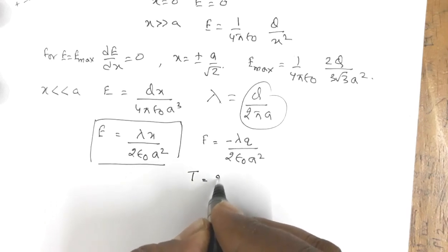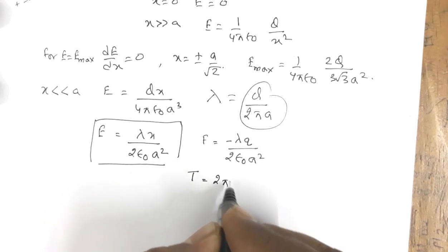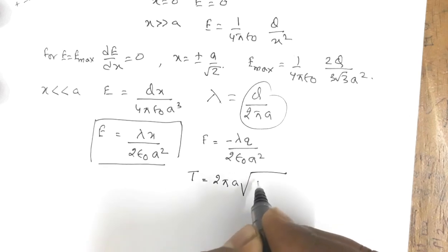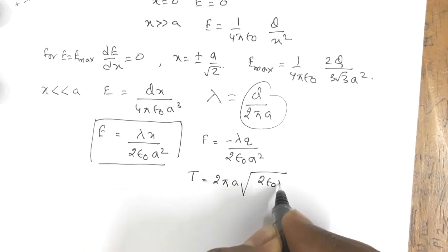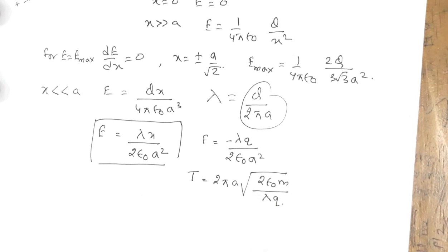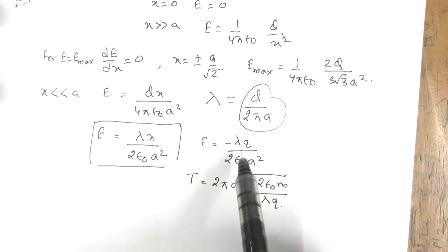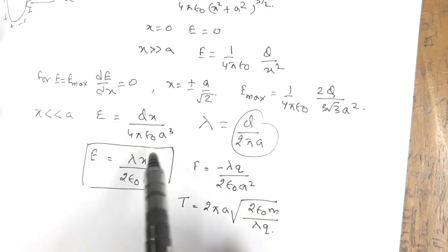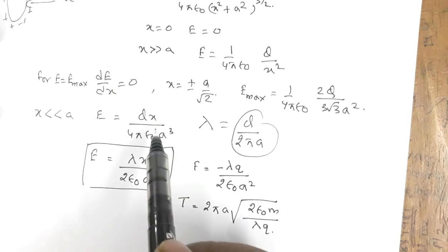...given by T = 2πa√(2ε₀m / λq). How do you get this? You write the expression for electric field...